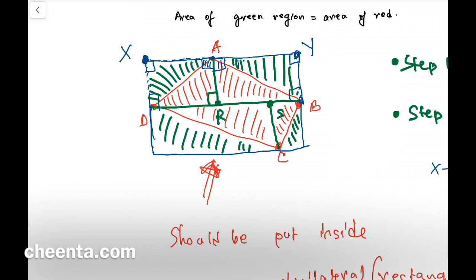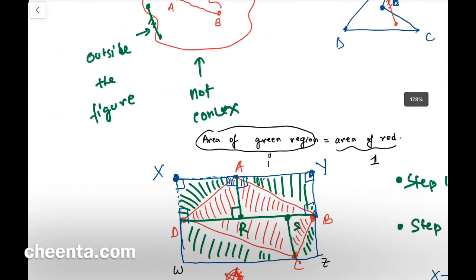Hence we are done, because then the red is one—we know that the area of the quadrilateral is one—so the green's area must also be equal to one. So the area of XYZW, this particular rectangle, is two. We have successfully enclosed this quadrilateral inside this rectangle.